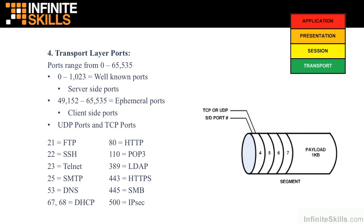Another function at layer 4 of the OSI model — the transport layer — is the identification of source and destination port numbers. These port numbers range from 0 to 65,535. A series of these are referred to as server-side ports, also called well-known ports, and another series are client-side ports from the ephemeral port range. A server has a listener — an application listening for inbound requests — bound to a port number, so when a request comes in, the server knows what service is being requested and hands it to the appropriate server-side application.